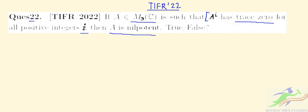This is from the statement area. If A^i has trace 0 for all positive integers i, then A is nilpotent.